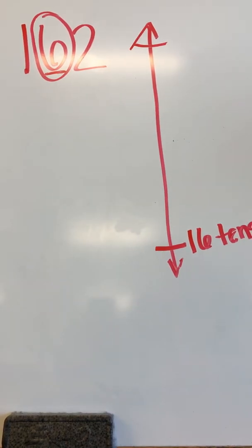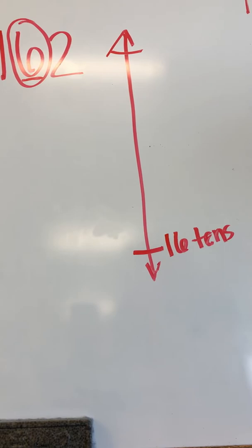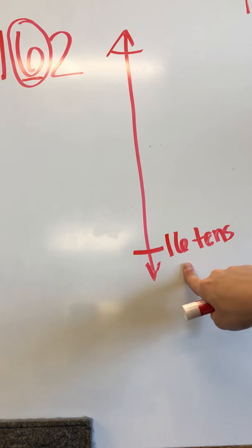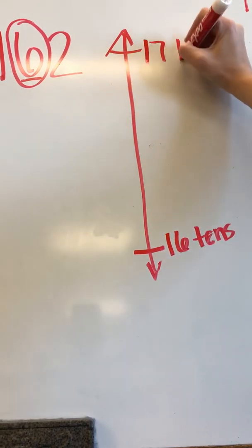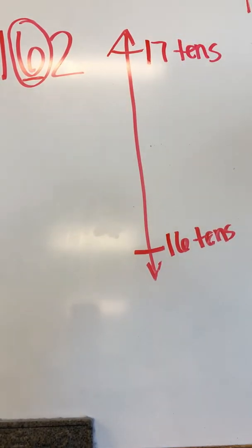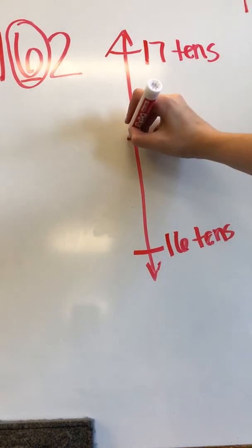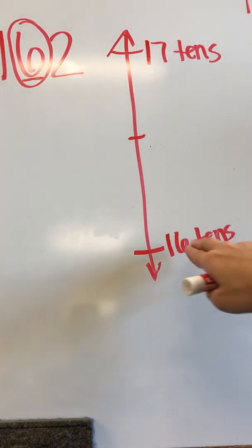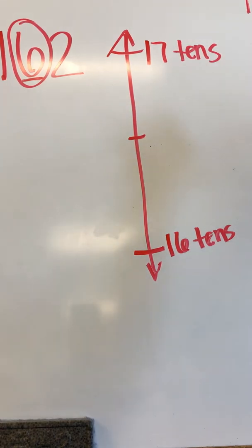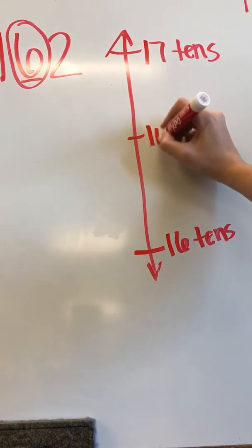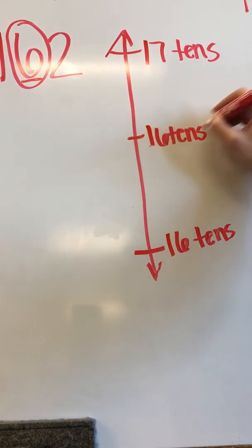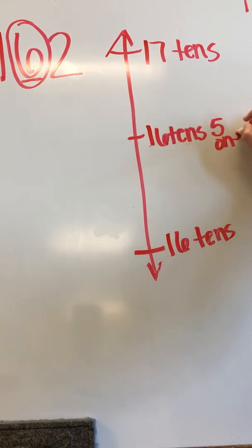The next thing I want to do is identify what's one more 10 than the number that I have on the bottom of my number line. One more 10 would be 17 tens. Next I have to find my midpoint, which is the number that is exactly in the middle. Well, we're writing in unit form. So in unit form I can write that as 16 tens, 5 ones.